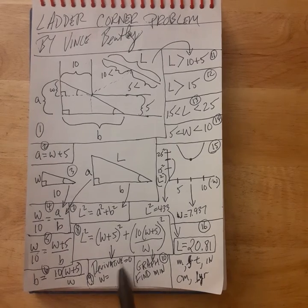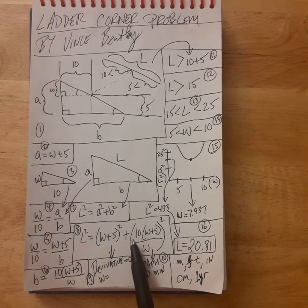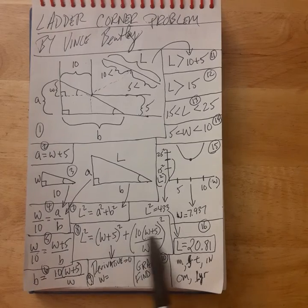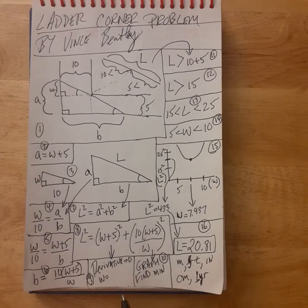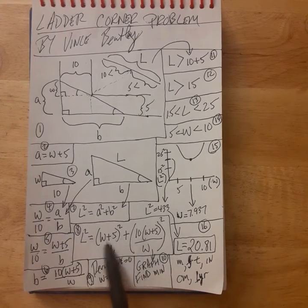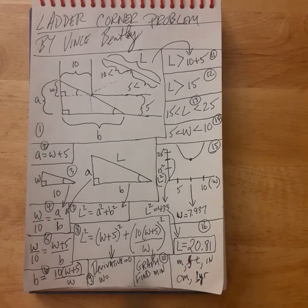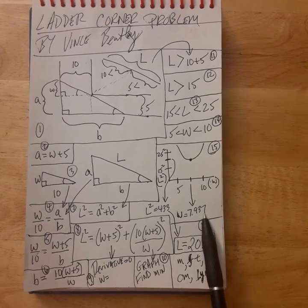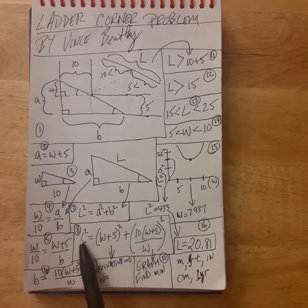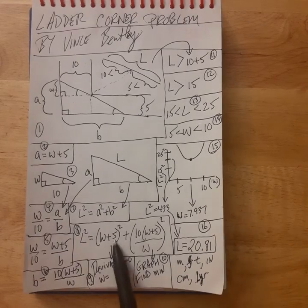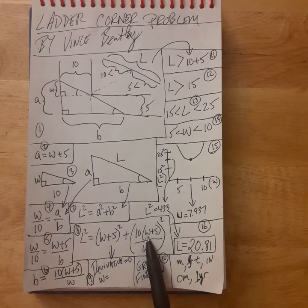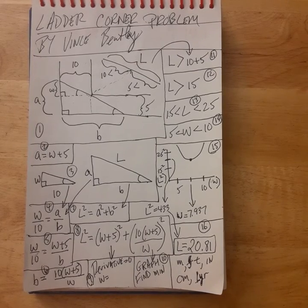We have two ways to minimize this expression: take the derivative, set it equal to zero, and solve for w — or graph it. The derivative approach is messy, so I want to show how to graph it so everyone, calculus or not, can solve it. For those who do know calculus: take the derivative with respect to w, set equal to zero, and you get w equals 7.937, giving L squared equals 433, so L equals 20.81.